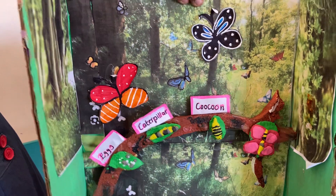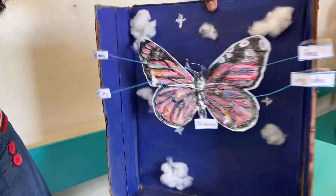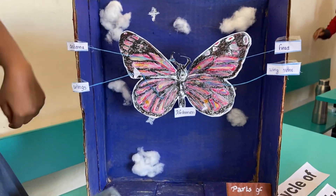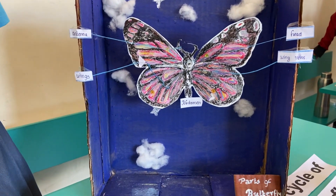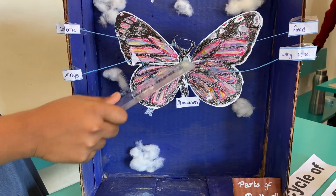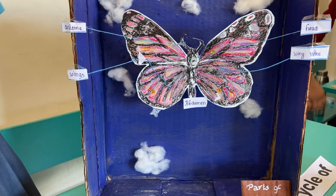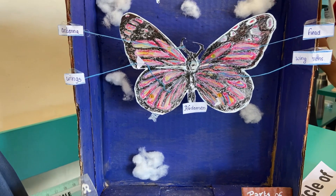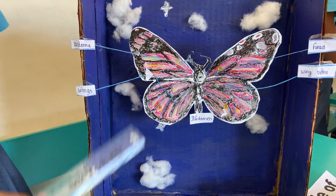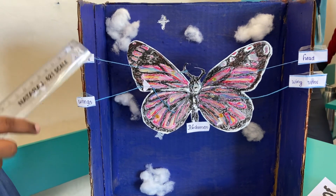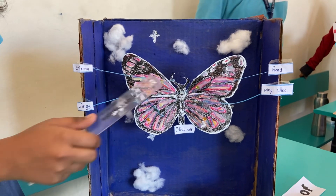Now let me tell about the parts of the butterfly. First let me start with the head. The head of the butterfly consists of its sensory organs and the feelings. Next is the antenna.